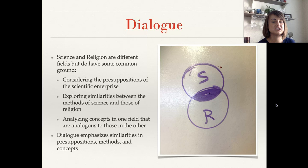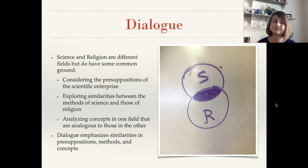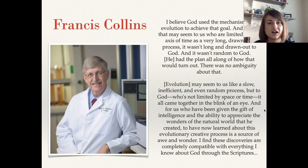The dialogue model emphasizes similarities in presuppositions, methods, and concepts, but it still maintains that there is still some stuff that is unique to science and independent of religion, or unique to religion and independent of science. So it's the Venn diagram option.